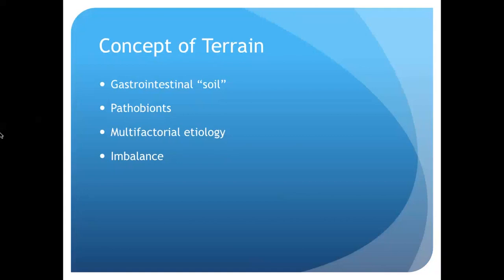You have to think about drugs you're on that can dramatically affect your terrain. Number one on the list is antibiotics, but a close second are acid-suppressing drugs, primarily proton pump inhibitors — the little purple pill like Nexium and others. One article from the journal Gut from 2015 talked about the changes in bacterial taxa seen in patients on proton pump inhibitors, with up to 20% of the bacterial taxa in the gut changed by these drugs.